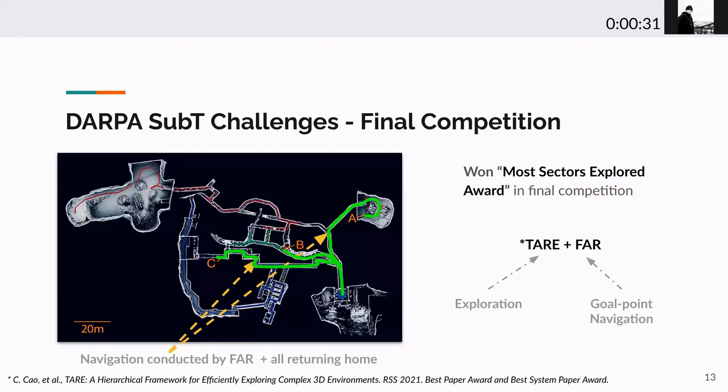Our team used a combination of FAR planner and TAR exploration planner to conduct the task. The way we used FAR planner is in sending the robot to a specific goal point. If you look at this figure as an outcome map and a robot trajectory from the final competition, the highlighted green trajectory was conducted by FAR planner, plus all robots returning home. What's worth mentioning is that we won the most sectors explored award to credit for our robot navigation and exploration capability.